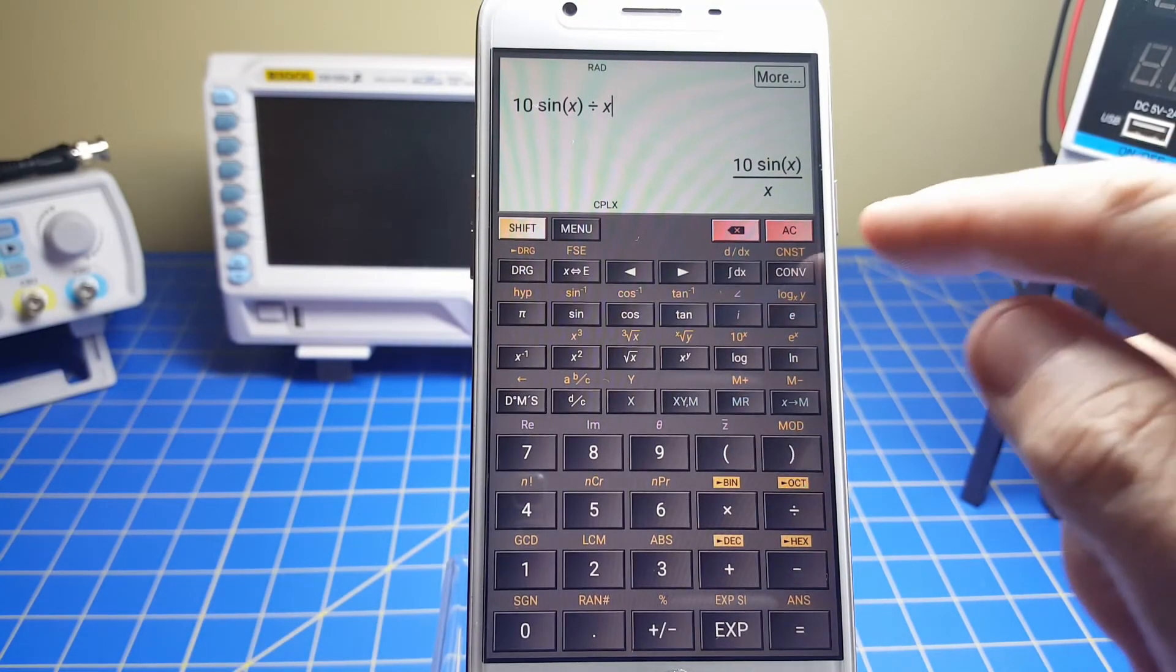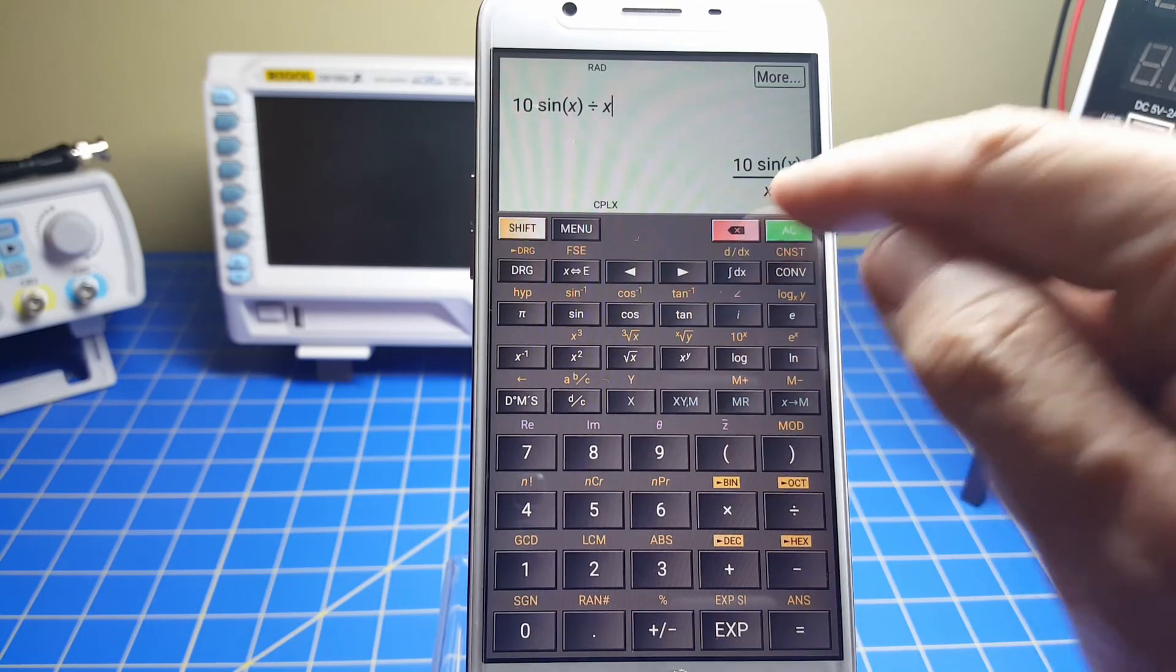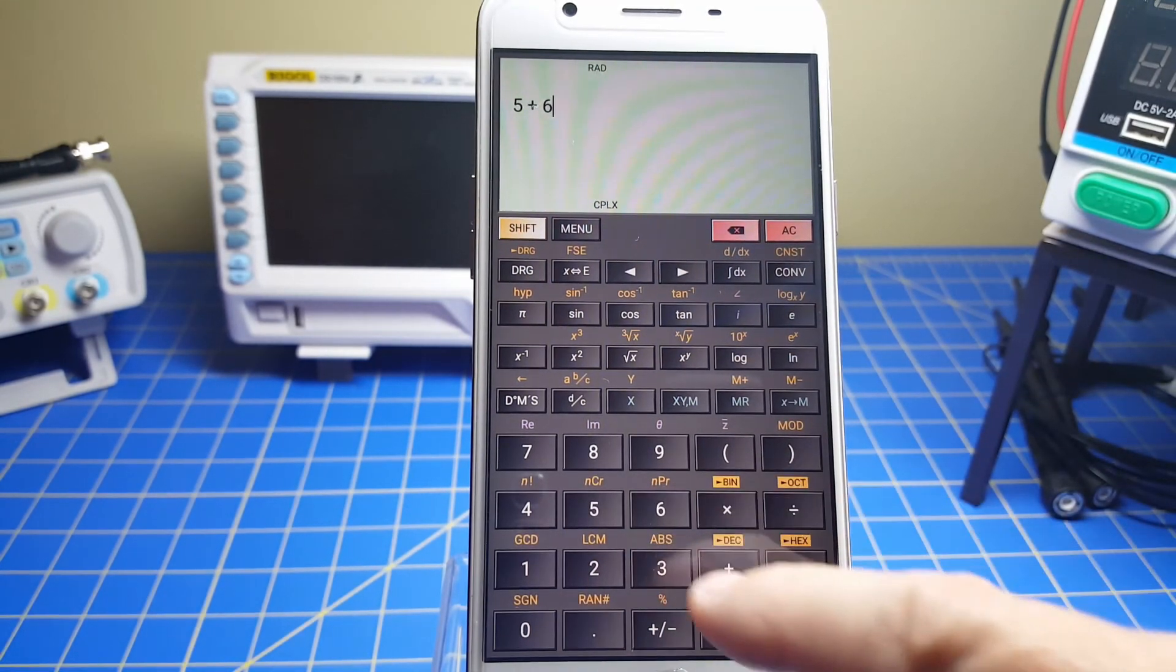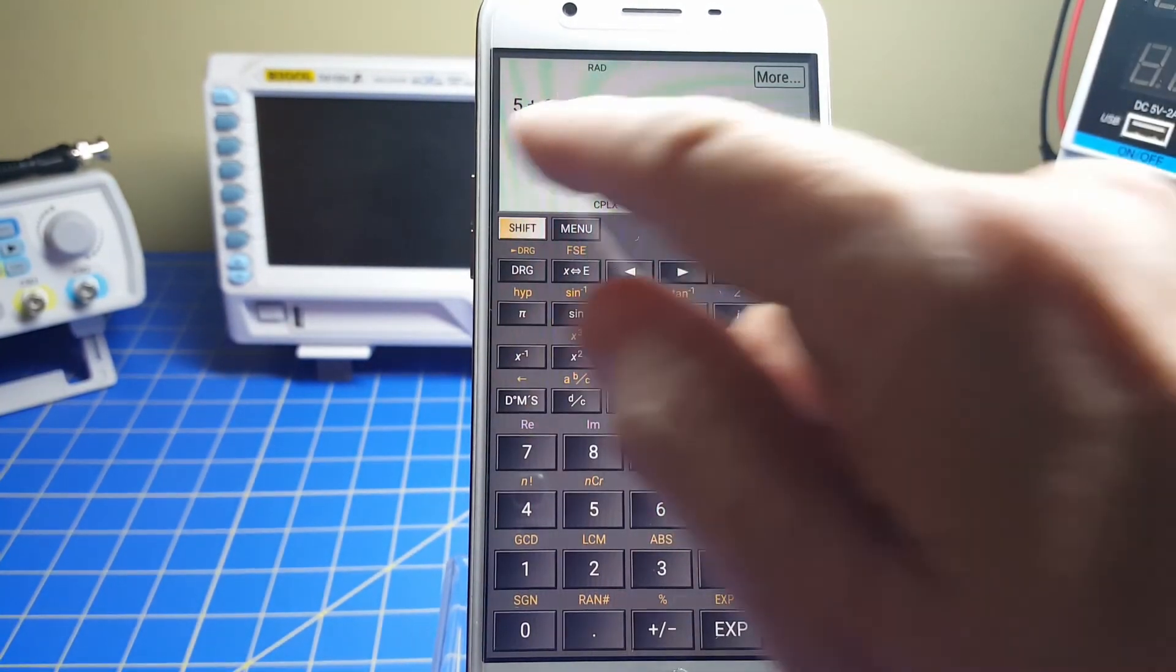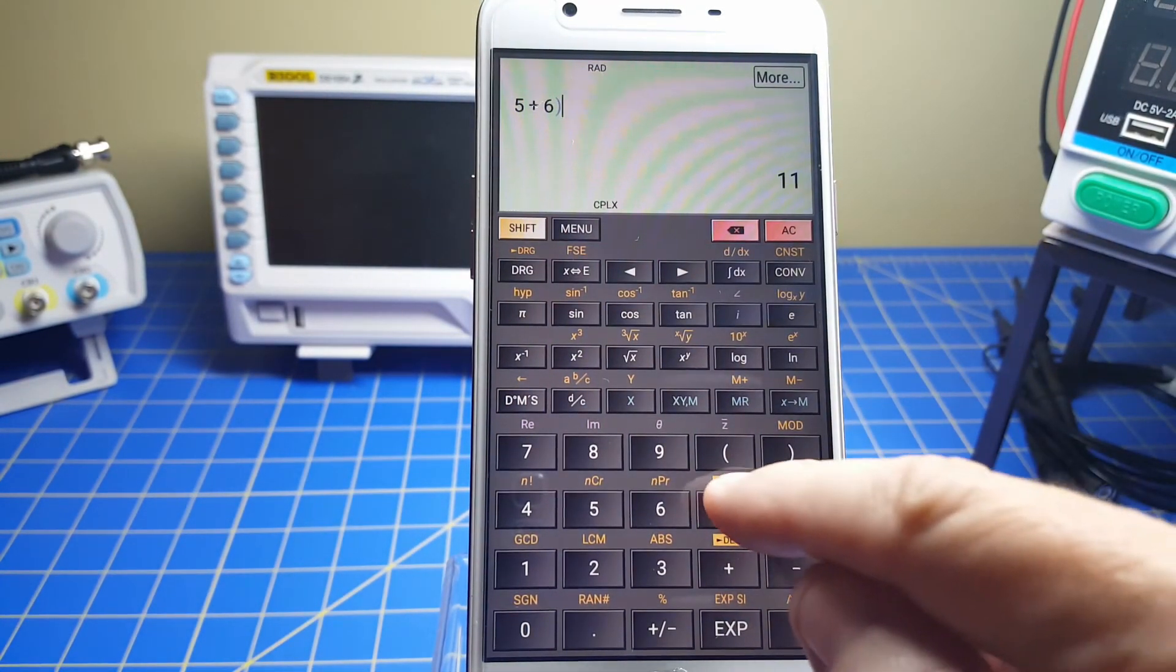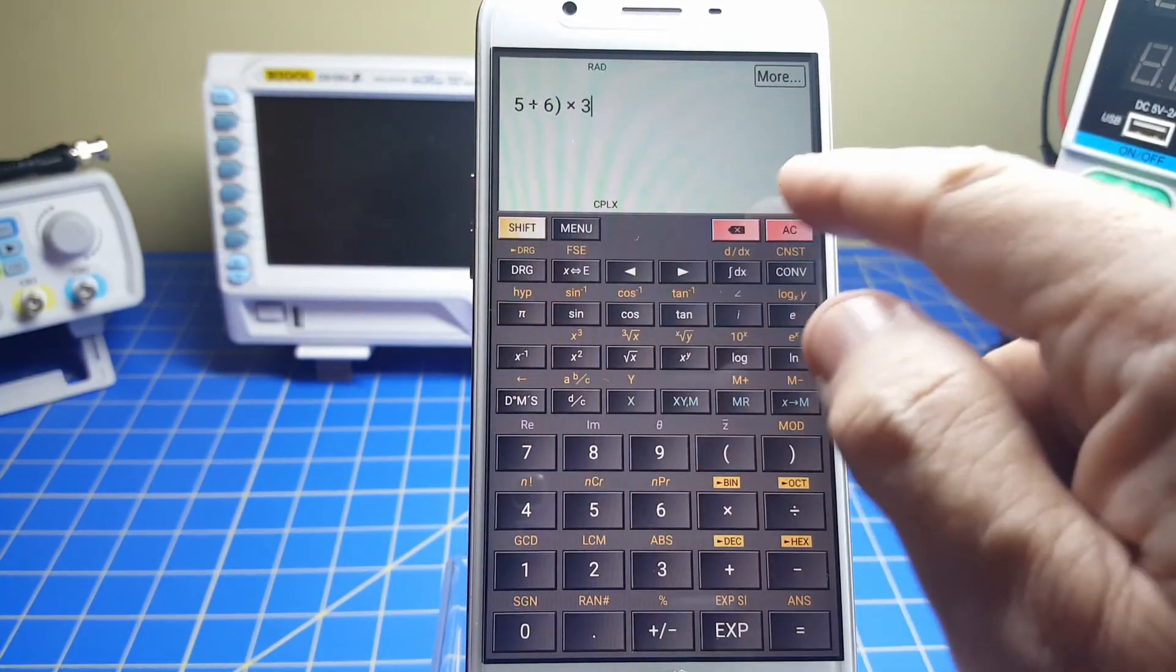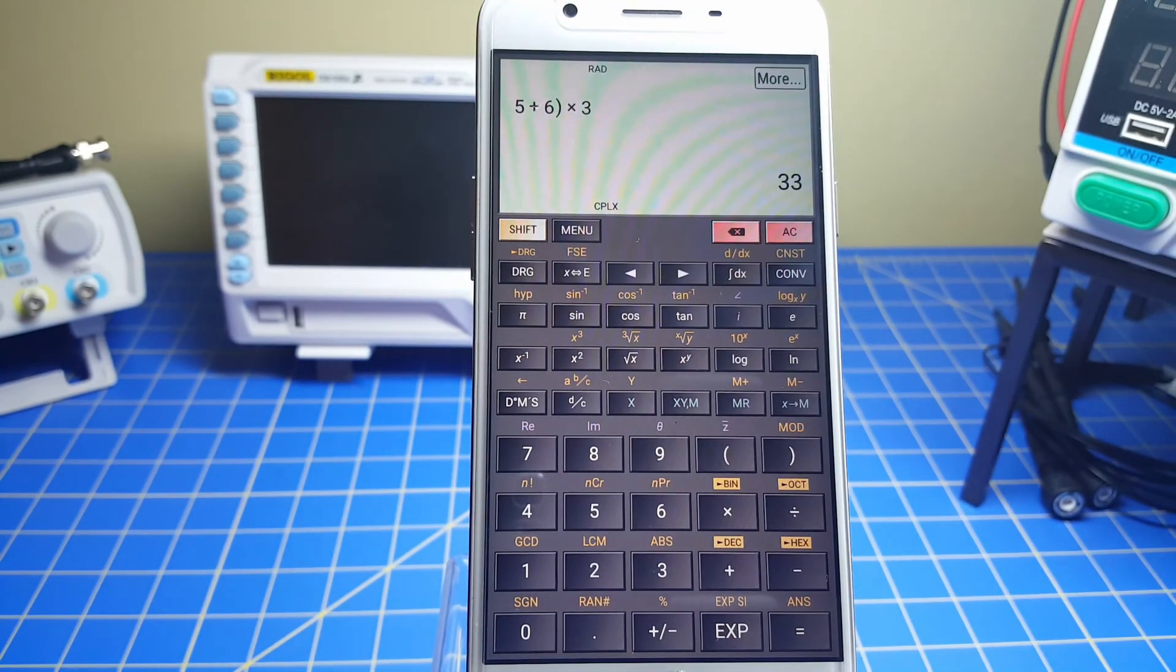Now another thing it's got, which is nice, is the use of parentheses is very easy. So for example, let's say I wanted five plus six and I said, oh no, I want to multiply that times three. I don't have to go back and put in a parentheses around this. I can just put the trailing parentheses times three and it gives me, this is 11 times three, 33. So there's an implicit parentheses there. So very nice.